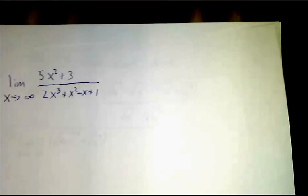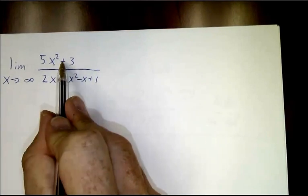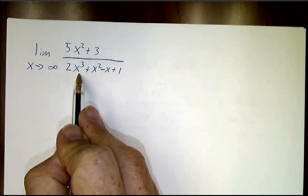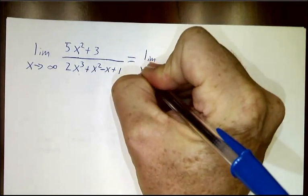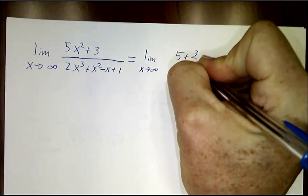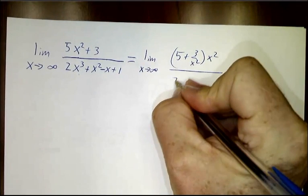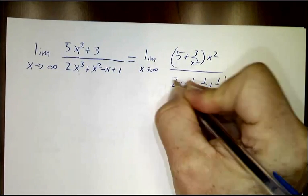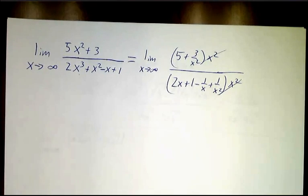Now, you might have different numbers of powers at the top and the bottom. So, here you have 2 powers of x upstairs and only 1 power of x downstairs. When that happens, all you can do is factor out an x squared. So, that's the limit of 5 plus 3 over x squared times x squared. And when we factor out an x squared downstairs, you get 2x plus 1 minus 1 over x plus 1 over x squared times x squared. You cancel the x squareds and now what happens?